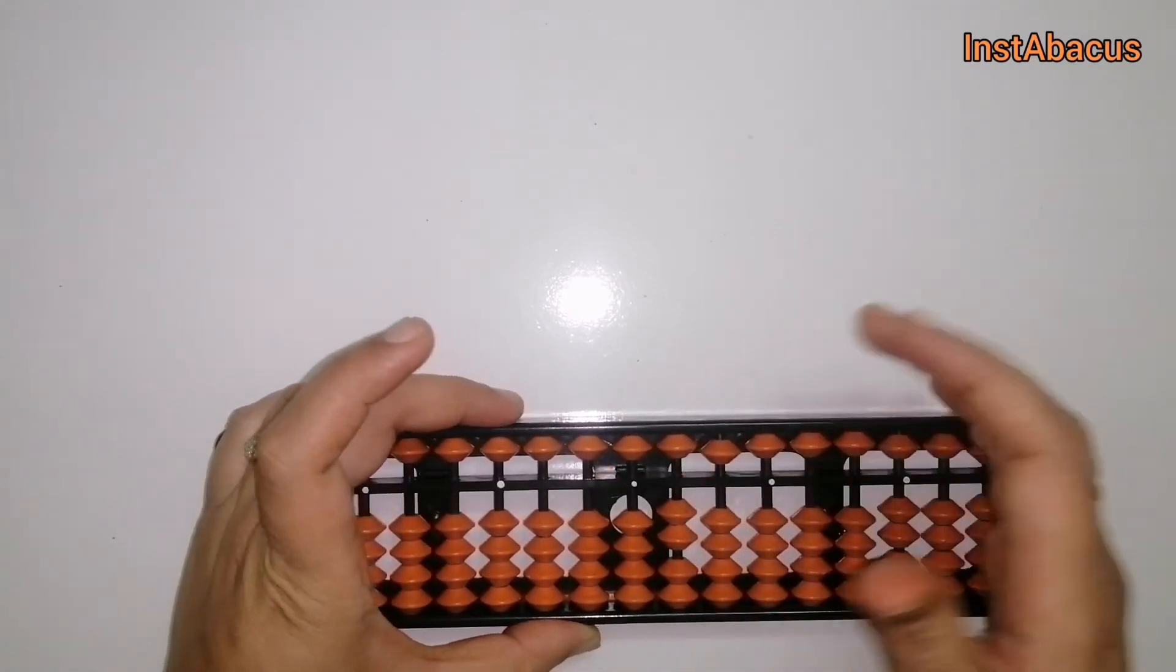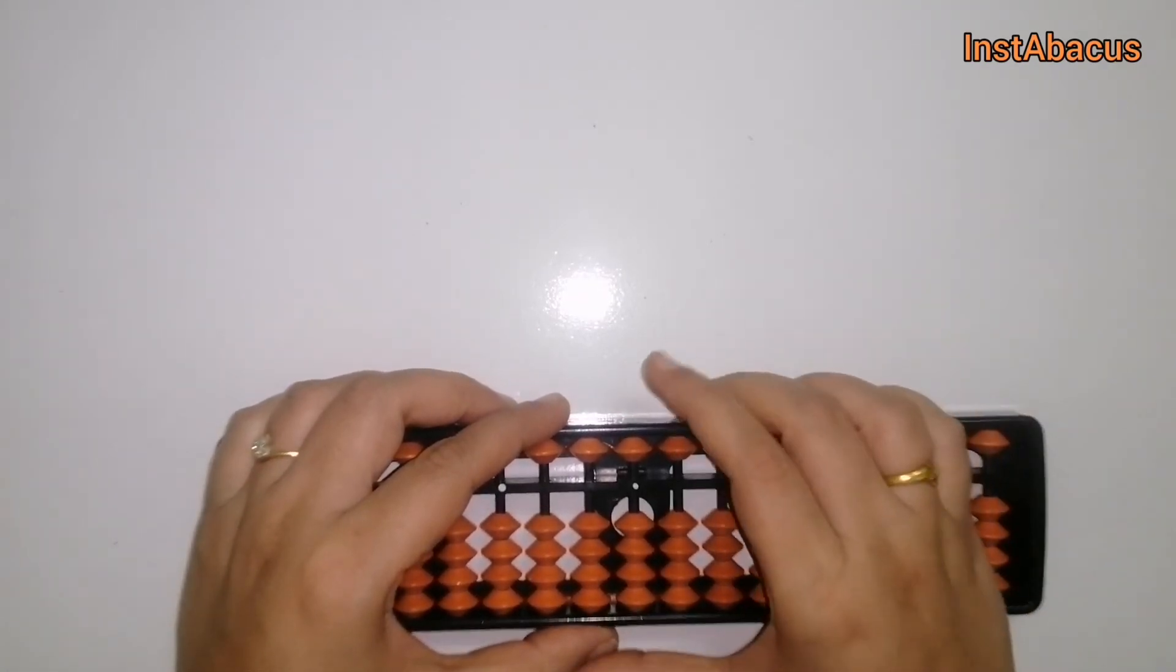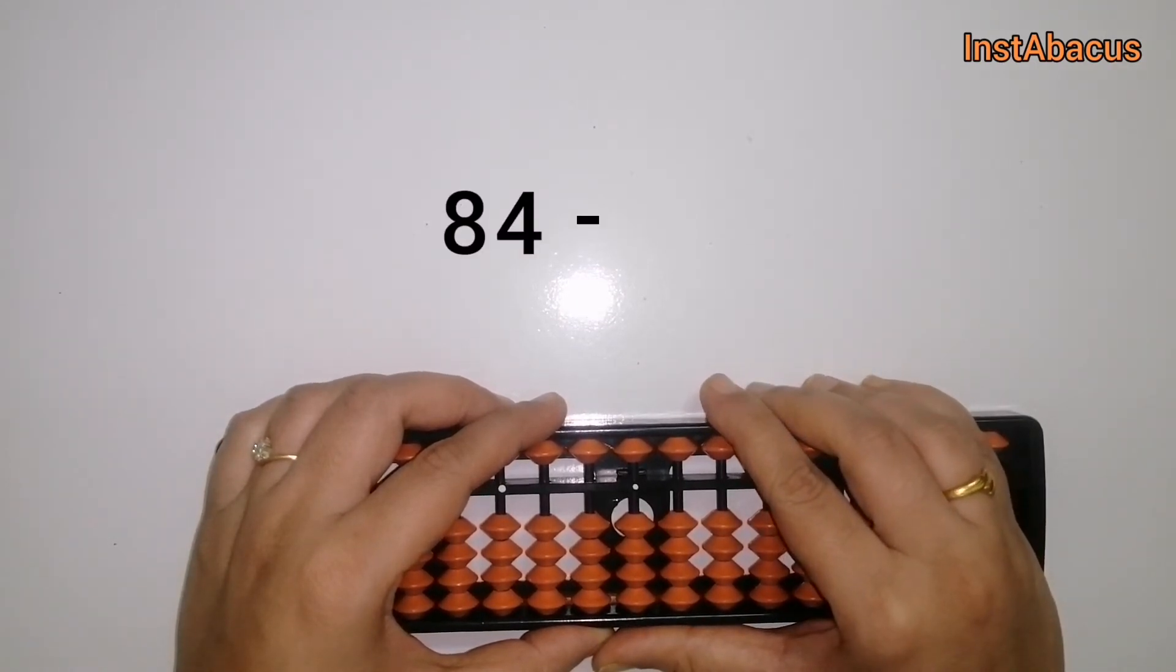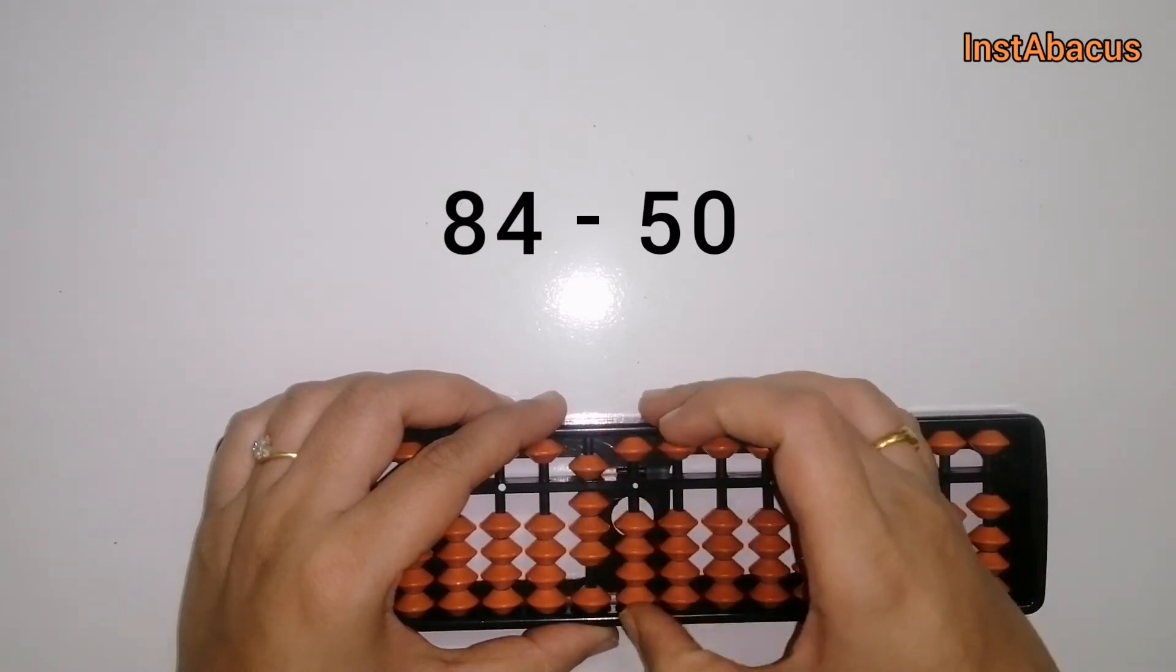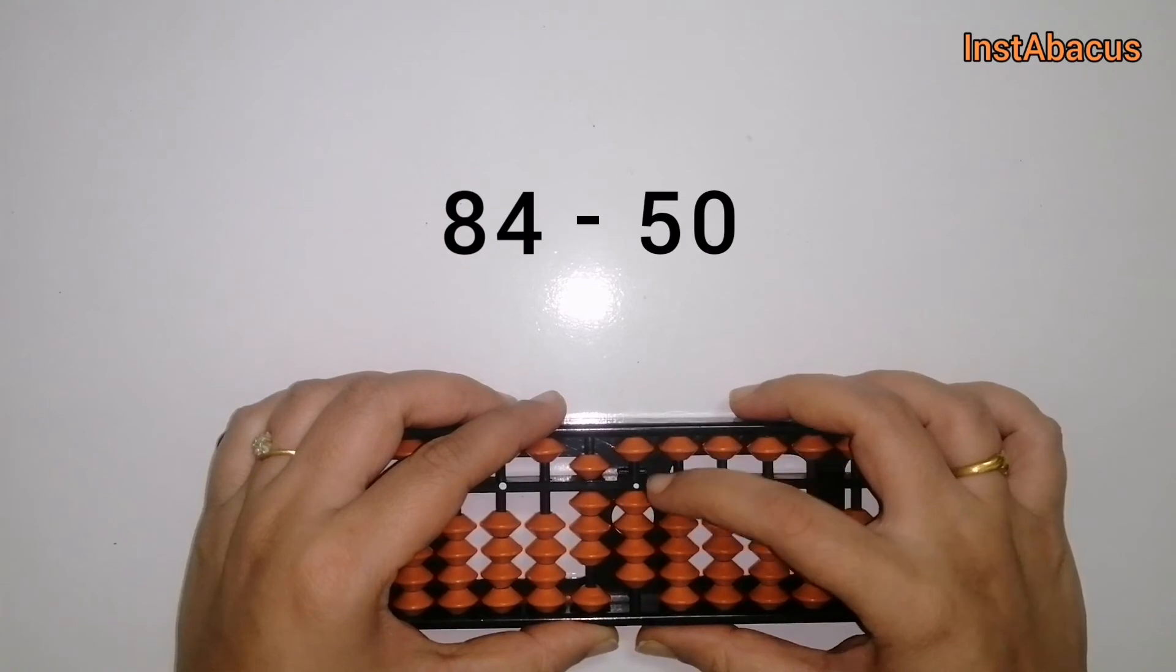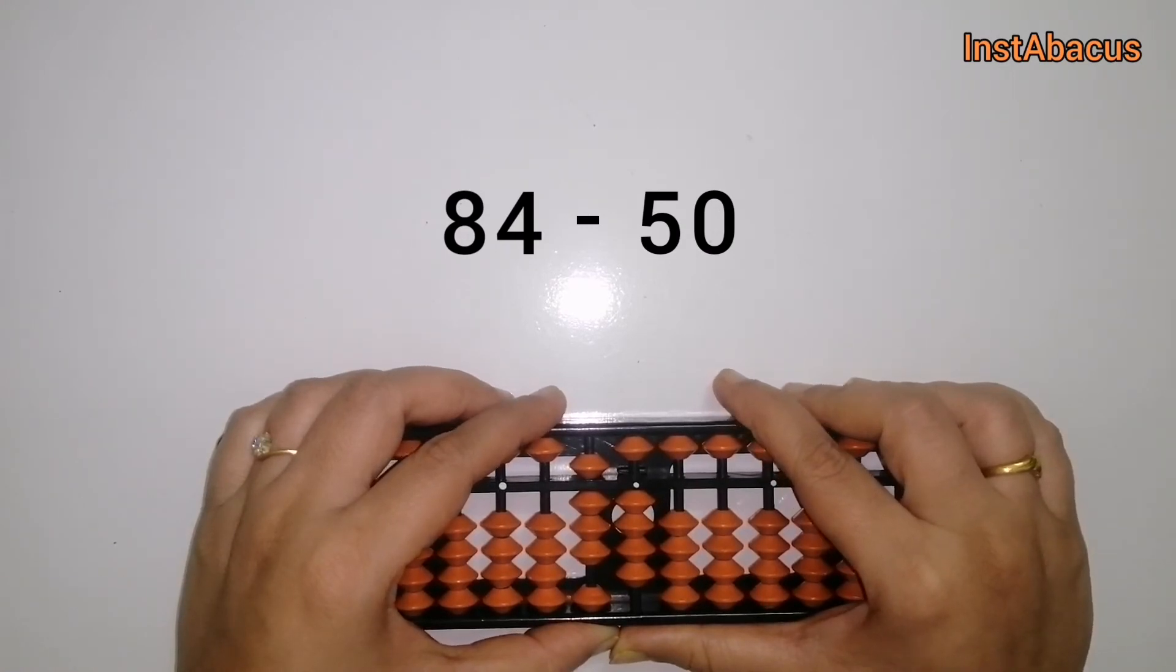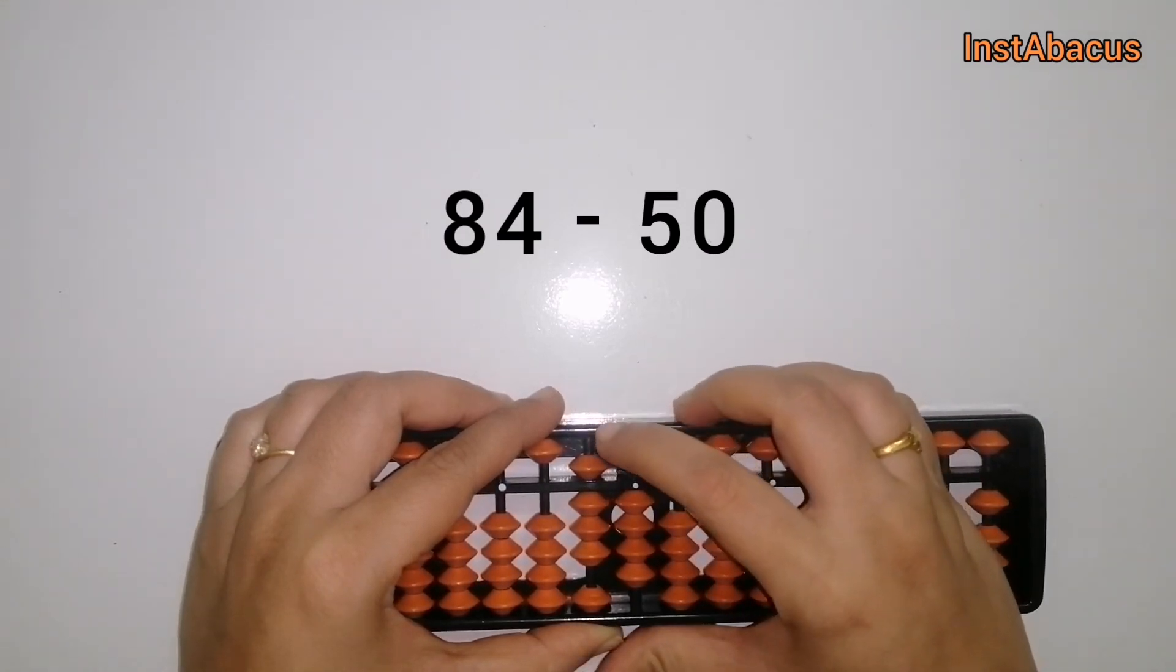Okay, one more now. 84 minus 50. So this is 84 on our abacus - eight here in the tens place and four earthly beads here in the ones place. Now from this we are going to subtract 50. For subtracting 50, we are going to move this heavenly bead here in the tens place away from the answering bar. Shall we do it?